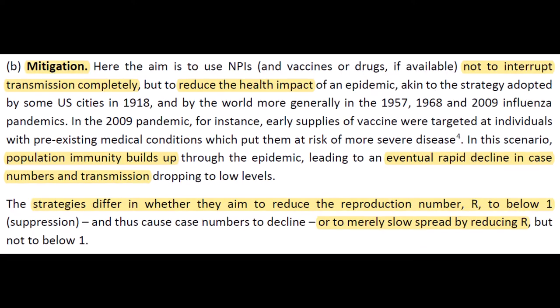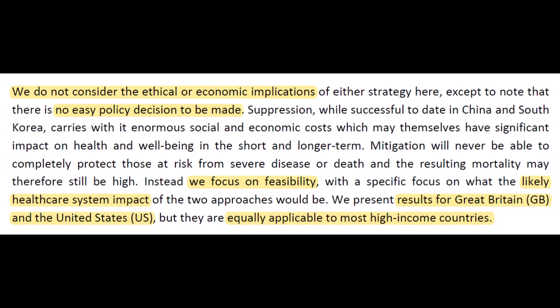Strategy B is mitigation. By slowing the spread through similar but less extreme means, mitigation intends to build immunity in the population over time at a manageable rate for healthcare systems. The key difference is that, unlike suppression which hopes to immediately start a decrease in cases, mitigation sees that as more of an end goal and instead focuses on reducing the rate of increase — if you've heard of flattening the curve, that's what they mean. Importantly, they don't really consider the ethical and economic aspects, and they note the human factor: people don't really do what they're told. They approach the problem pragmatically using existing healthcare systems of the United States and Great Britain as their models, believing this should apply to comparably high-income countries.